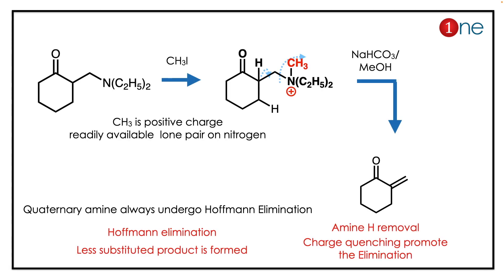The answer is interesting because it involves Hofmann elimination. The first type of reaction is substitution at the amine. Here, the CH3 cation and iodine anion are formed; the CH3 attacks the lone pair on nitrogen. What really happens is you get a quaternary ammonium salt. The quaternary ammonium salt is known for elimination at the beta carbon.